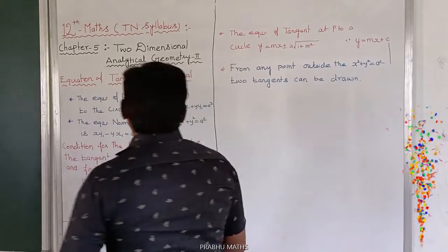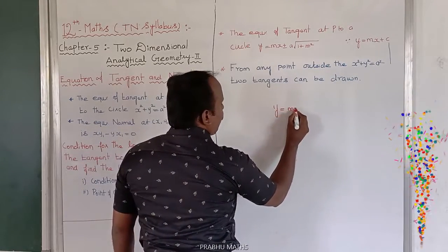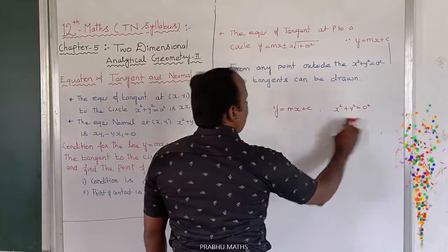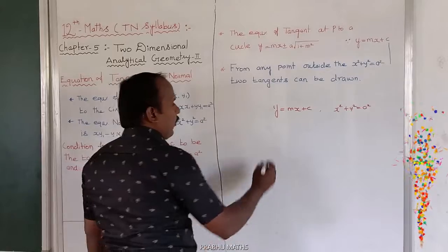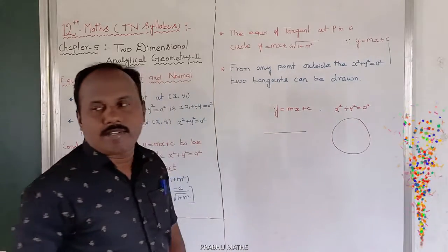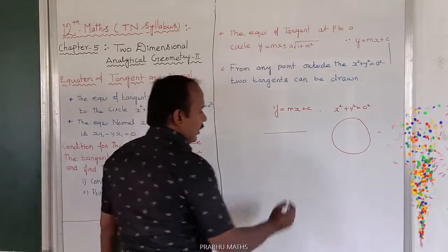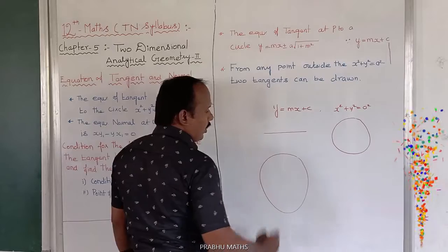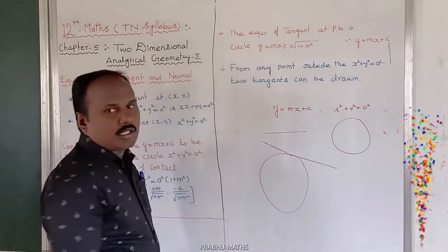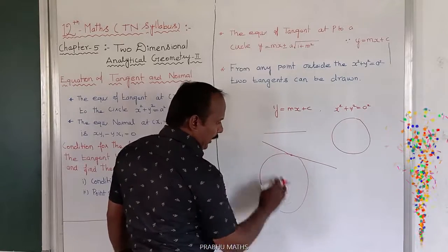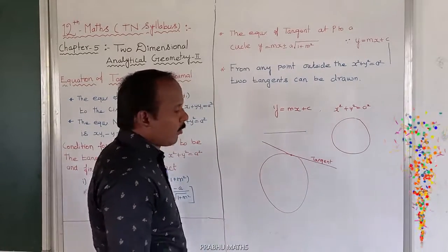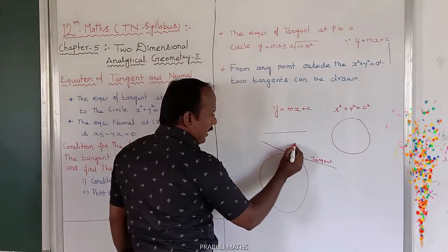First of all, let us take the straight line: y = mx + c. And consider the curve x² + y² = a², which is a circle. The tangent equation is a straight line passing through one point, touching the circle at exactly that point. The normal equation means it is perpendicular to the tangent equation — that is, a 90-degree formation.